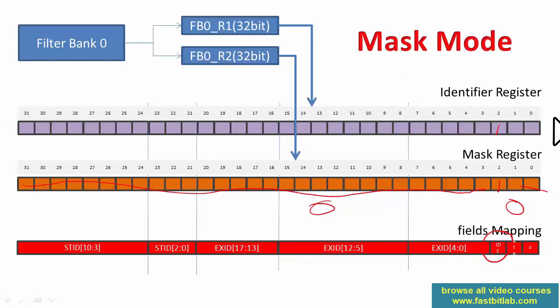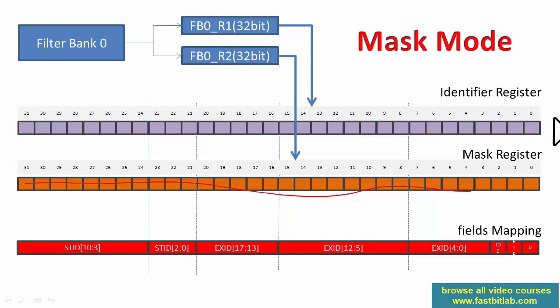To accept all frames, you don't need to configure the filter at all — just make sure you configure which FIFO the message should go to, which will be covered later. Since all bits in the filter registers default to zero, none of the bits are compared against received frames, so all frames are forwarded to the configured FIFO without filtering.